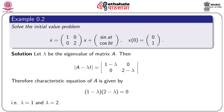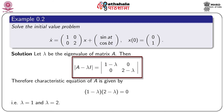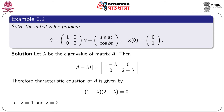In the next example, we solve the initial value problem dx/dt = Ax + f(t), where A = [1, 0; 0, 2] and f(t) = [sin(at), cos(bt)]ᵀ, with initial condition x(0) = [0, 1]ᵀ. We calculate the eigenvalues from det(A − λI) = 0, which gives the characteristic equation (1−λ)(2−λ) = 0, yielding λ = 1 and λ = 2.